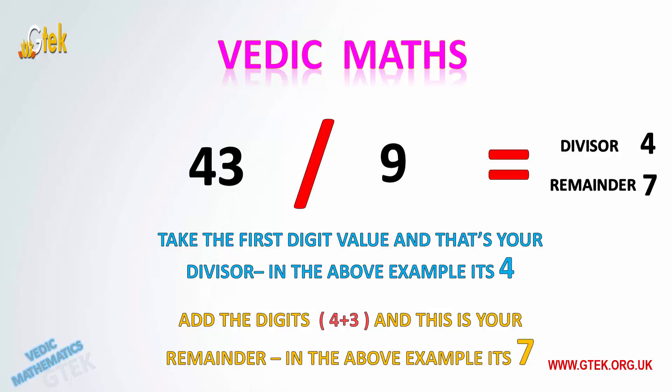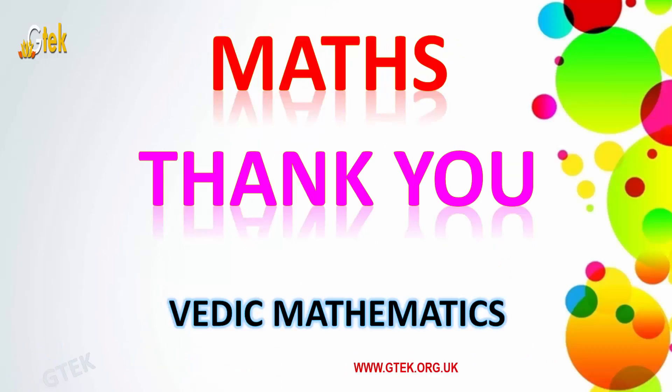Now let's look at another example: 23 divided by 9. The first digit, 2, will be our quotient, and 2 plus 3 equals 5, which is our remainder.